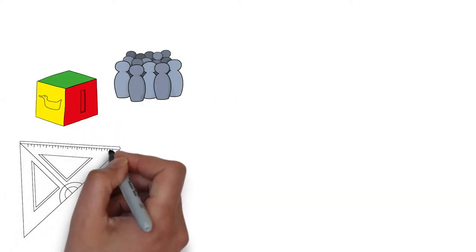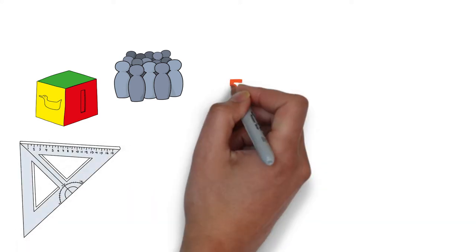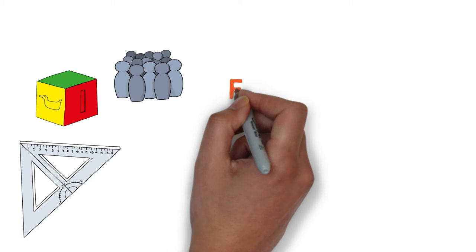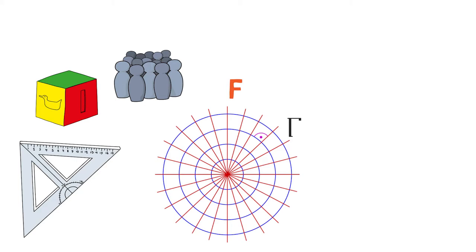One among the many applications of differential equations is to find curves that intersect a given family of curves at right angles. In other words, given a family of curves capital F, we wish to find curves gamma which intersect orthogonally with any member of capital F whenever they intersect.